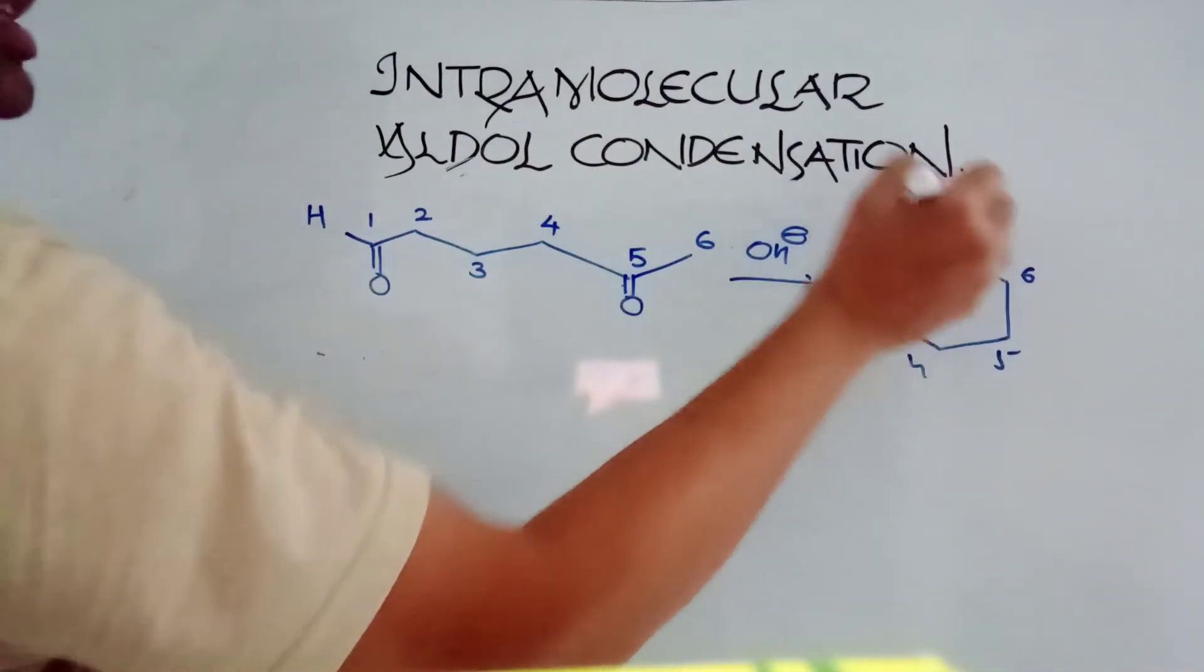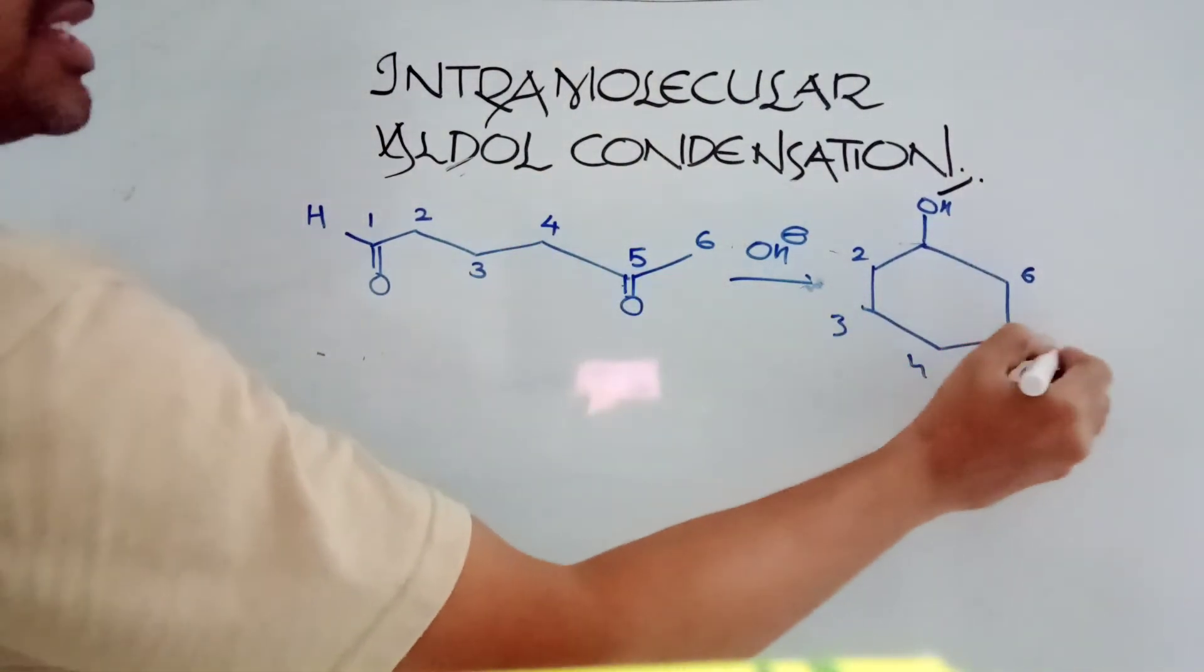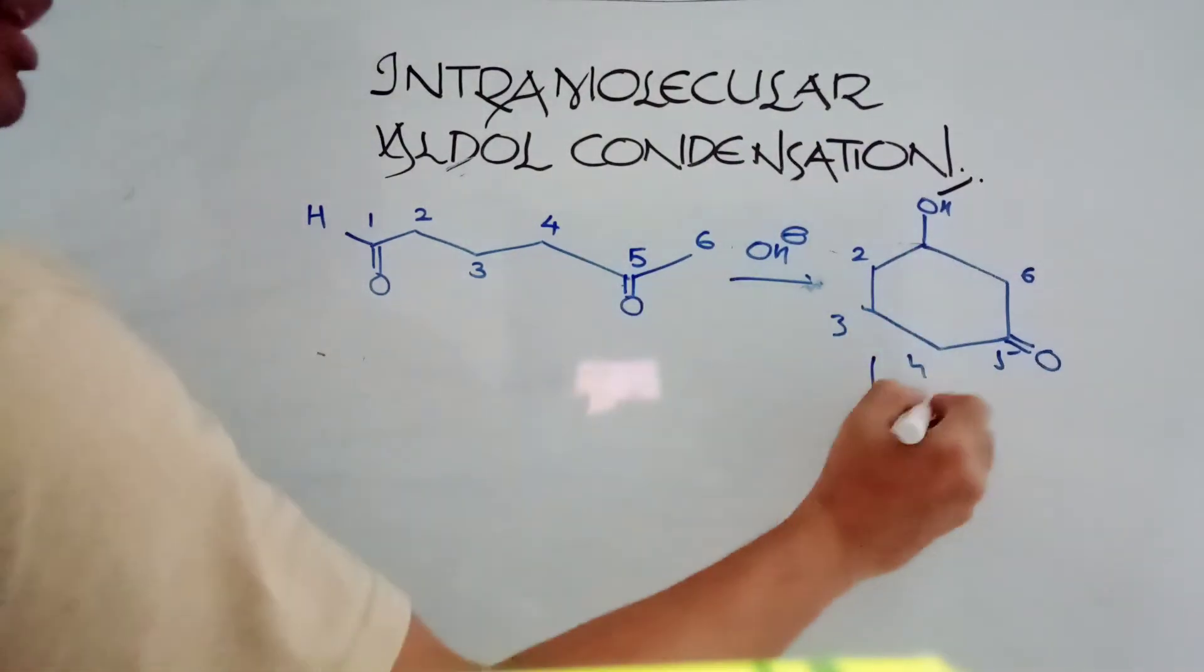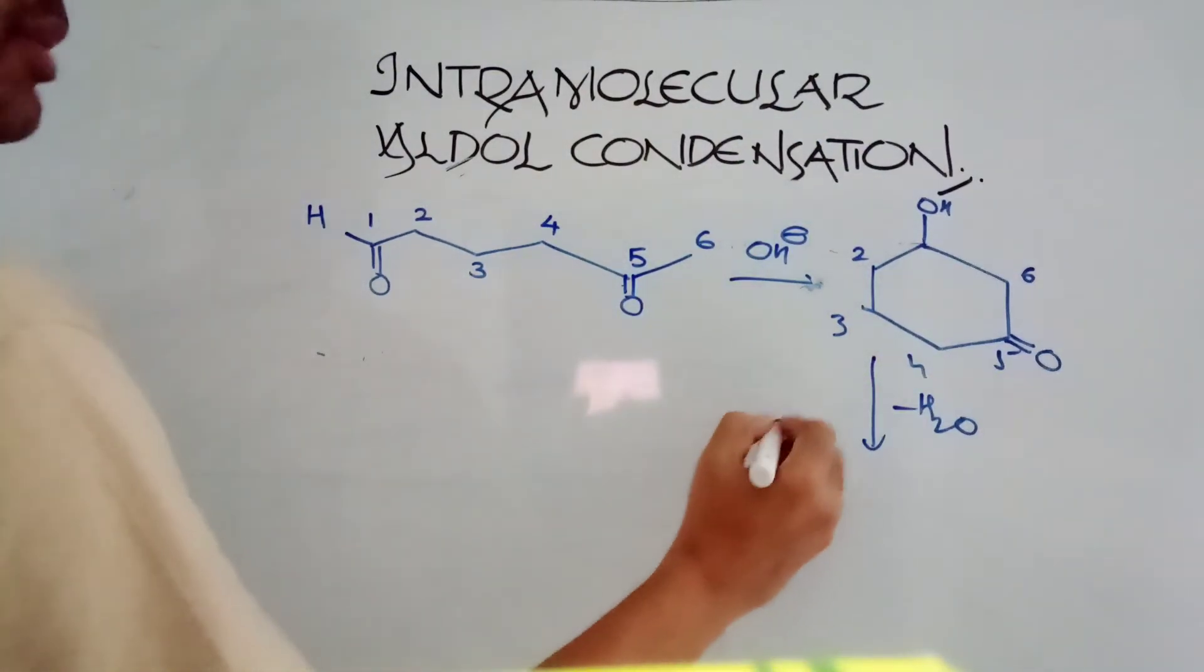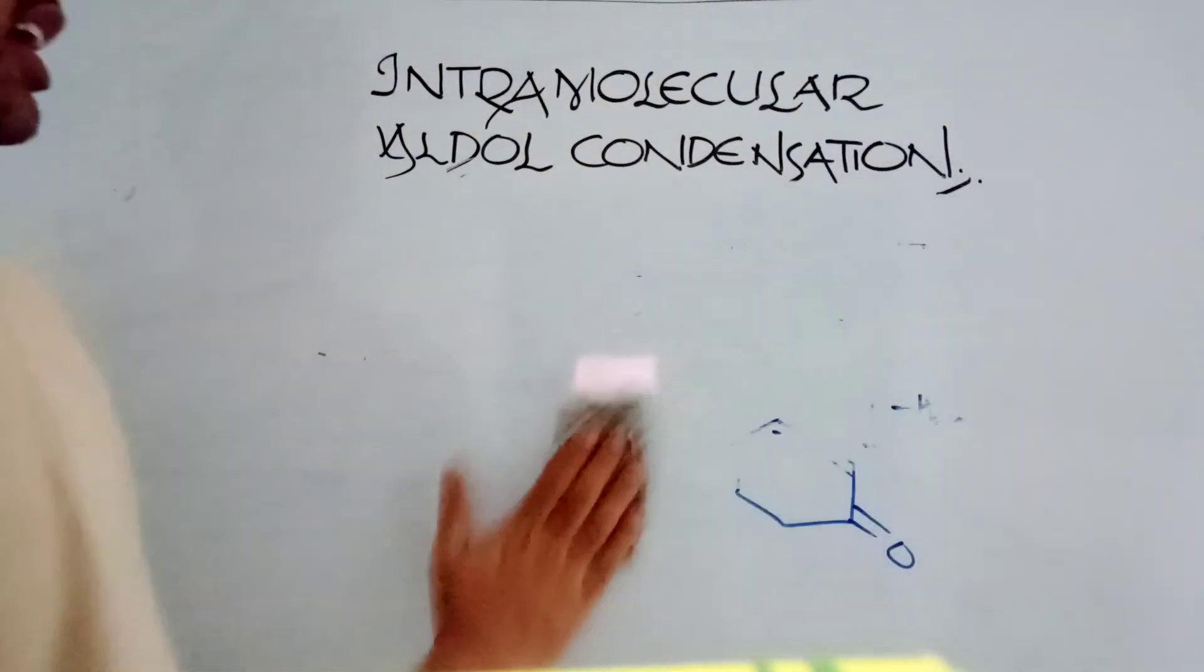First place will become OH. The fifth place will be ketone. This is as it is. Between them a bond is formed. So later if you remove water molecule, that will be like this: double bond O. So what is the shortcut for this? The shortcut is very simple.